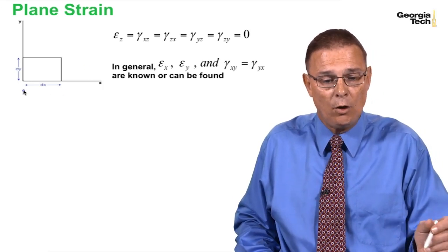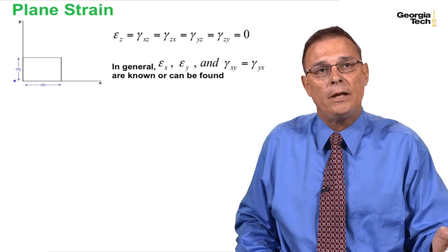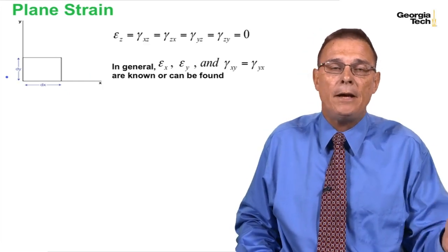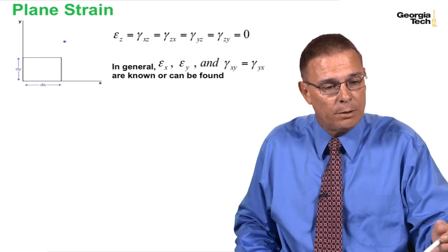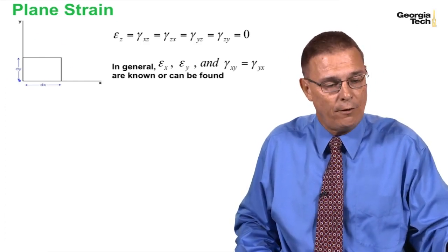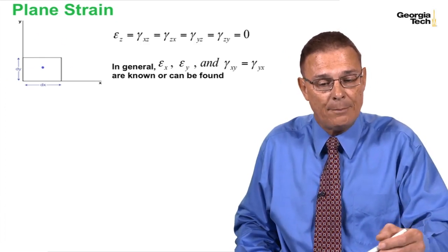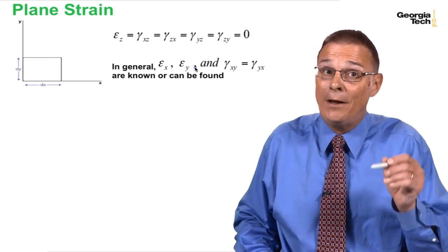In general, with the plane strain condition, just like with plane stress where we could find sigma x, sigma y, and tau xy, in general for plane strain we'll be able to measure and find epsilon x and epsilon y and gamma xy.